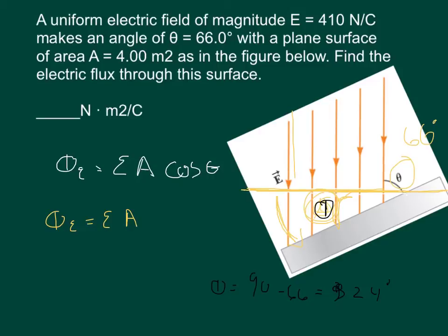So if the book is correct, then I should be able to plug in the answer of E. So E is equal to 410 newtons per coulomb. A is equal to 4 meters squared. So I should be able to plug in 410 times 4 times cosine of 66. However, that doesn't work.